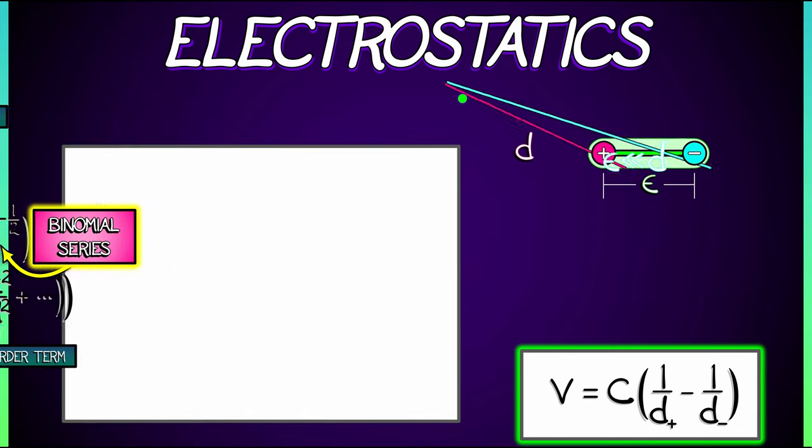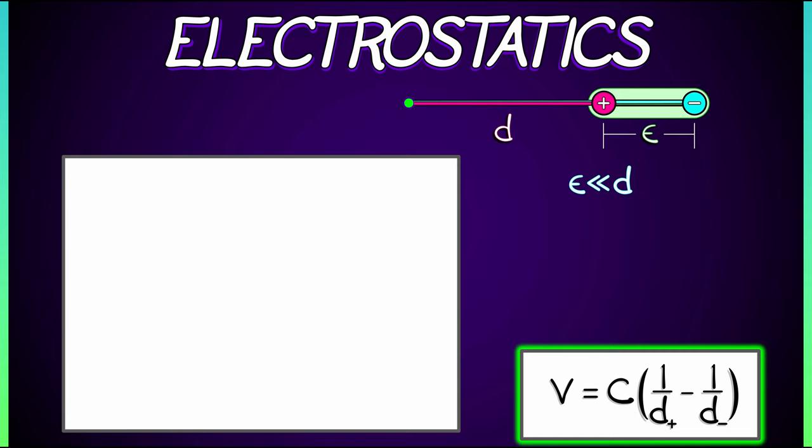Well, let's change things up a bit. Let's look at a potential that is parallel to the dipole, but again, a distance D away from the positive charge. What is V in this case? Well, it's C times one over D, distance to the positive charge, minus one over the distance to the negative charge, which here in this configuration is D plus epsilon.